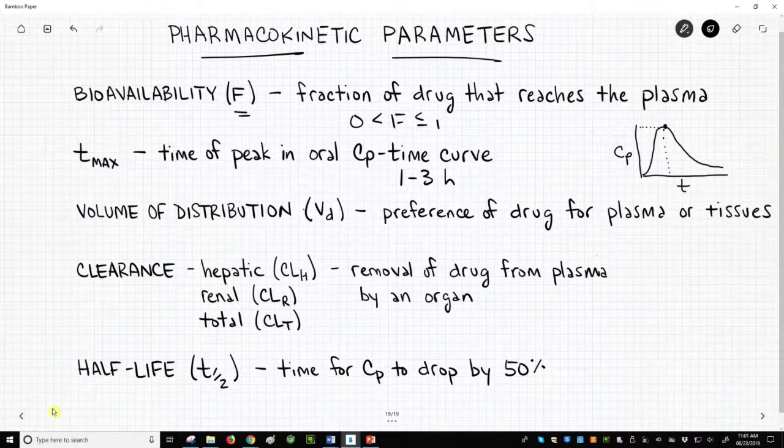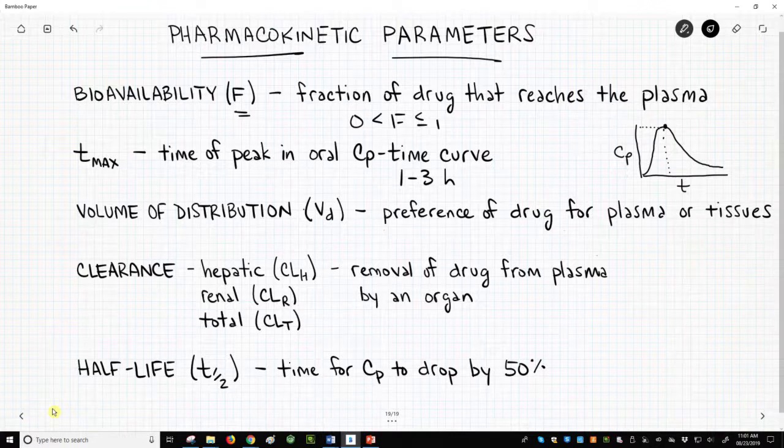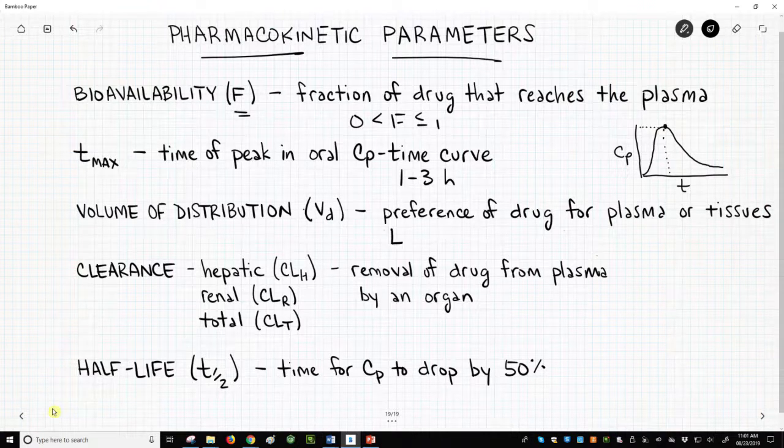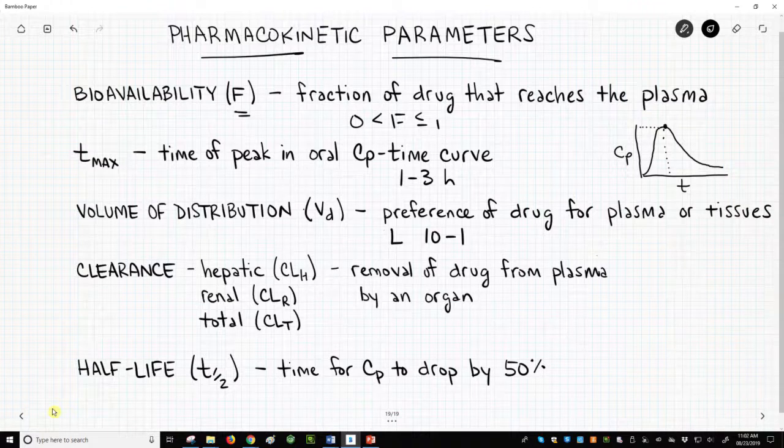Volume of distribution is, in a sense, the extent to which a drug prefers to remain in the plasma versus entering other tissues of the body. The parameter is reported on one of two scales. If the value has units of liters of volume, then a normal range might be 10 to 1000.